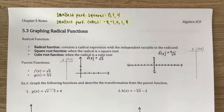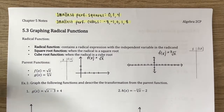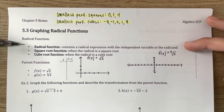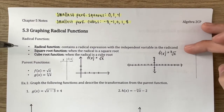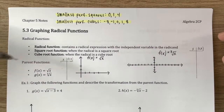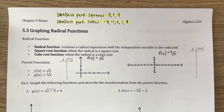Section 5.3 is graphing radical functions. We're going to focus on graphing square roots and cube roots. A radical function contains a radical expression with the independent variable inside the radicand, so basically an x inside the radical. A square root function is when the radical is a square root, and a cube root function is when the radical is a cube root.